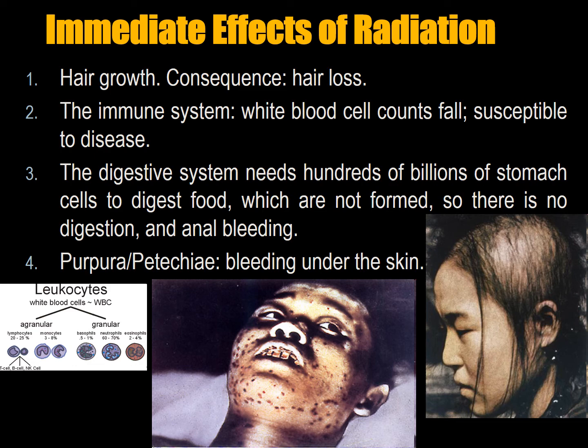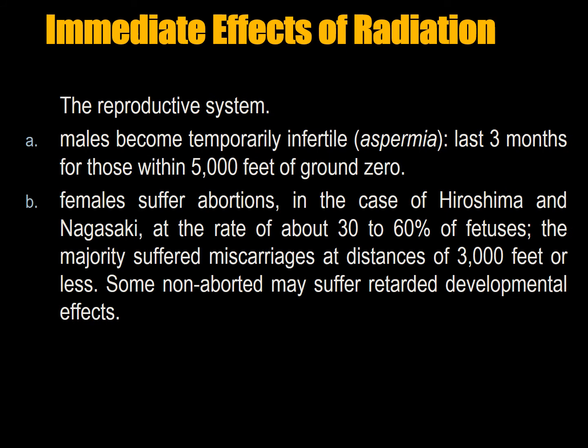You get purpura or petechia — bleeding under the skin — because your blood can't form the cells to stop bleeding, so bruises become particularly severe. The reproductive system, which operates continuously, is also severely affected. Male sperm takes about 72 days to form; any severe trauma such as fever kills sperm. Males will become temporarily infertile — basically aspermia from lack of sperm — and it can last up to three months for those within 5,000 feet of ground zero.